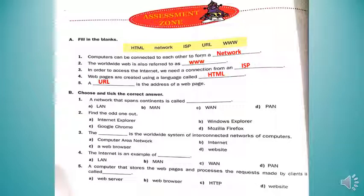The second part of the assessment zone is: choose and tick the correct answer. A network that spans continents is called WAN. The odd one out among Internet Explorer, Windows Explorer, Google Chrome, and Mozilla Firefox is Windows Explorer. The worldwide system of interconnected networks is the internet. The internet is an example of WAN (Wide Area Network). A computer that stores web pages and processes client requests is called a web server.